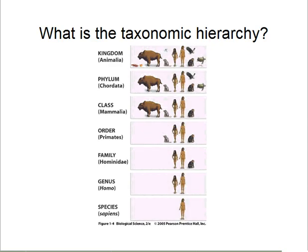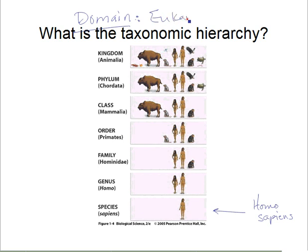This last slide shows the taxonomic hierarchy you need to know for class. It starts with the largest group of organisms and splits into smaller and smaller groups. Note that 'domain' is missing from the top of this illustration — remember, there are three domains: Eukarya, Bacteria, or Archaea. If we're classifying humans, Homo sapiens, we start with the largest group: we are in domain Eukarya, meaning we have a true nucleus inside all of our cells.